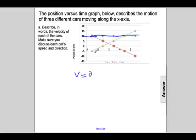Let's take a look at the initial location for car 3. It starts off at negative 5 and ends up at about positive 15. Its displacement is positive. If its displacement is positive, its velocity is greater than zero.